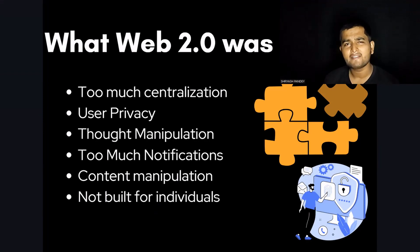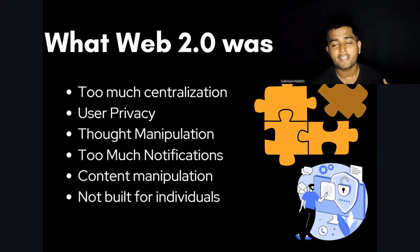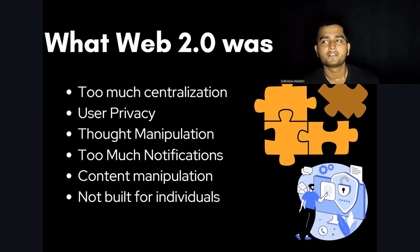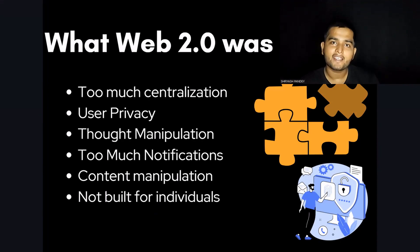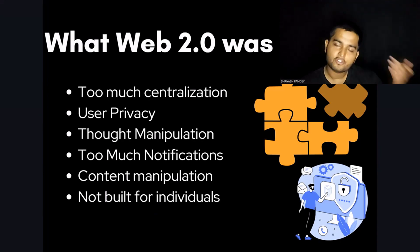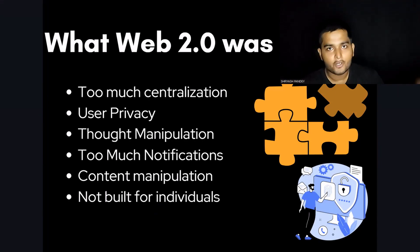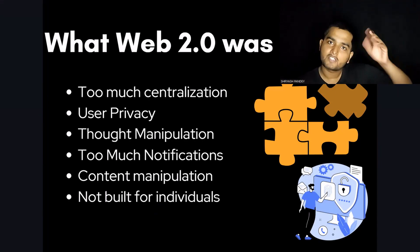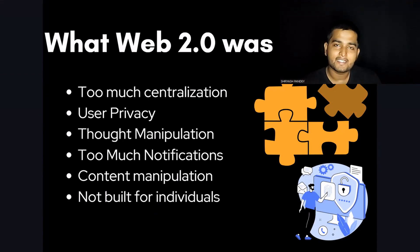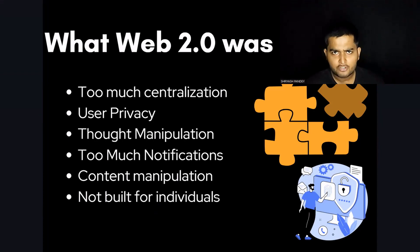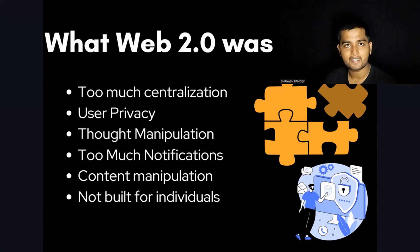User privacy became a major concern in Web 2.0. The next big issue was too much centralization — a few big tech giants captured most of the market share, and not everyone could participate in the governance.